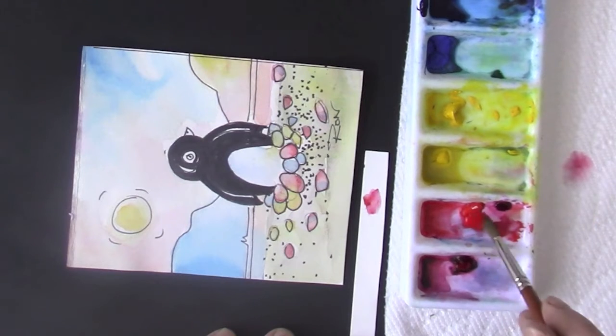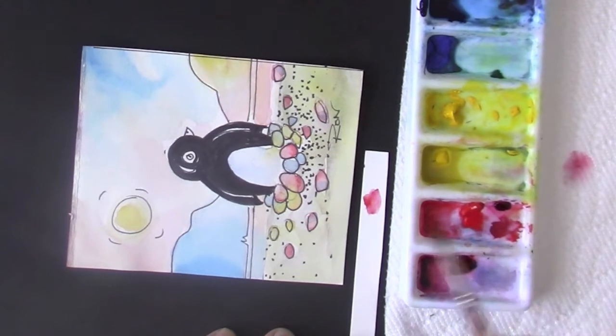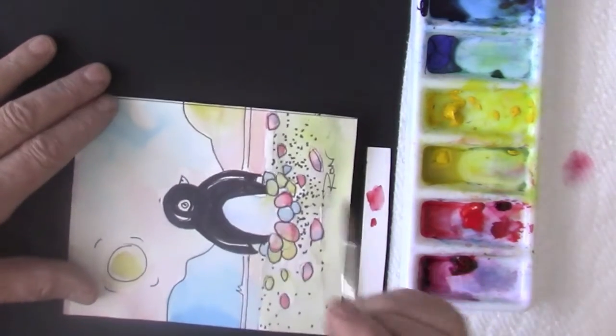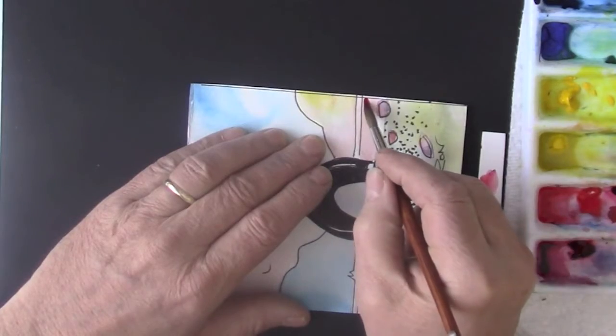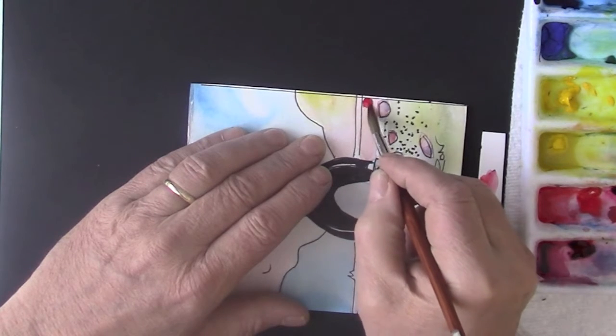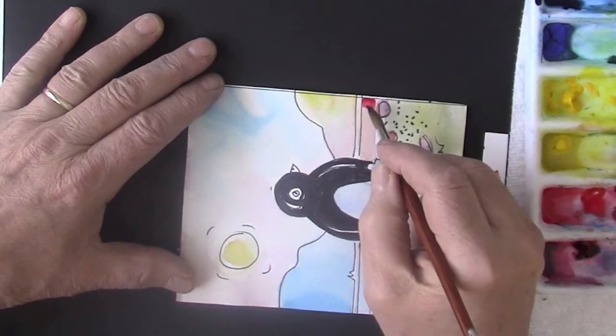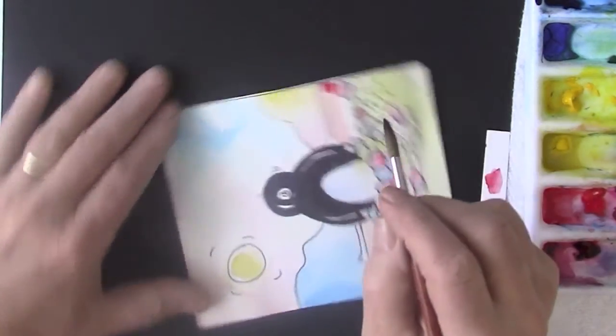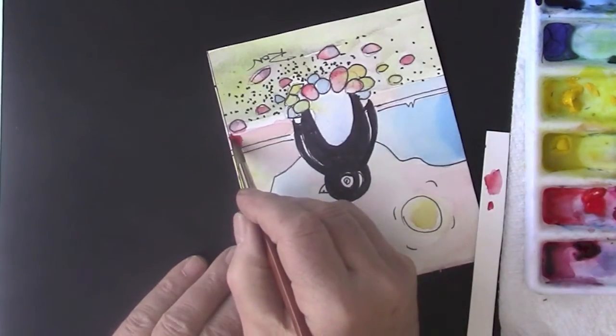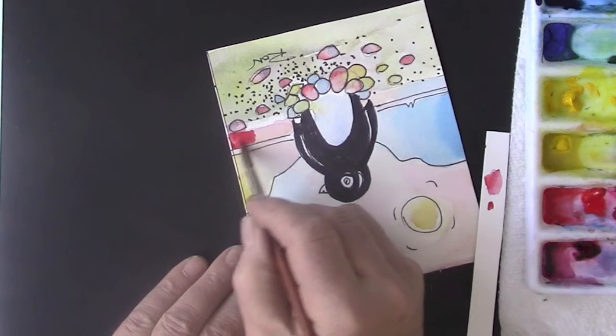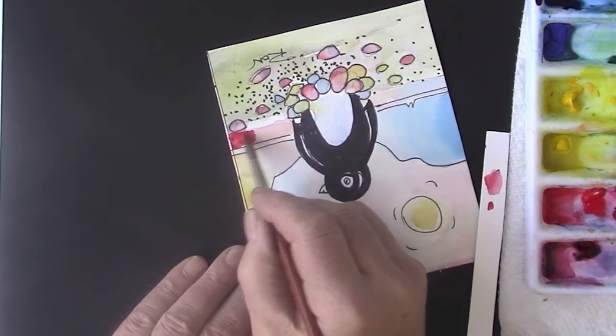Now it's a little thicker so that, there we go, it's not quite transparent, that's what I want. Pop it on, then I'm going to start to spread it out, keeping it a little thick.